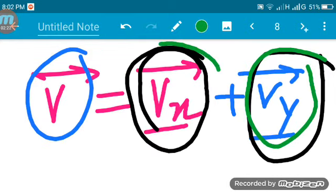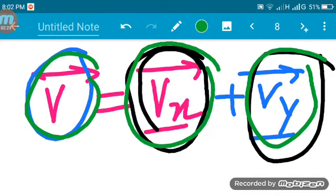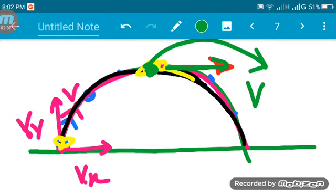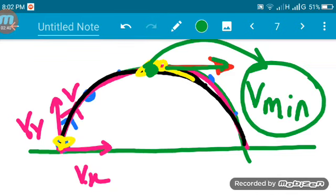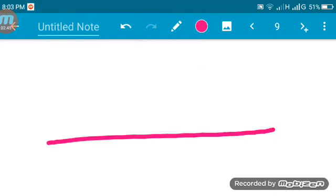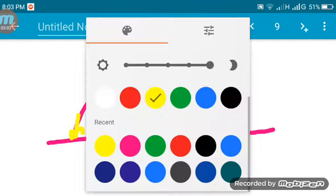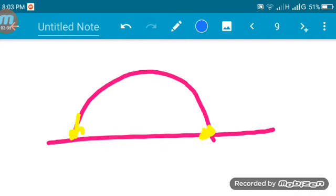When Vy equals zero at the maximum height point, the projectile reaches its peak. At this maximum point, the vertical component is zero but Vx remains. This is where the bullet or projectile reaches maximum height.